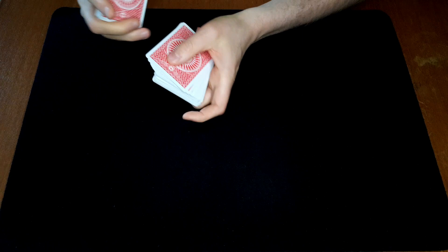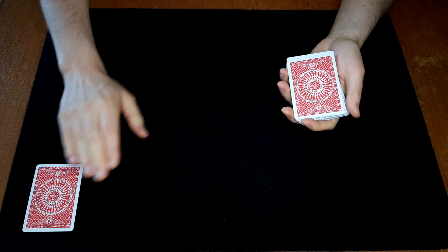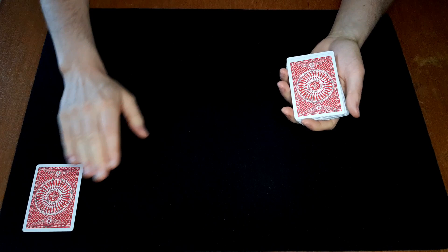So for this trick I would ask a spectator to say stop wherever he likes. Let's say he stops me here at this card and I would ask him to place his hand on this card so I can't touch it.